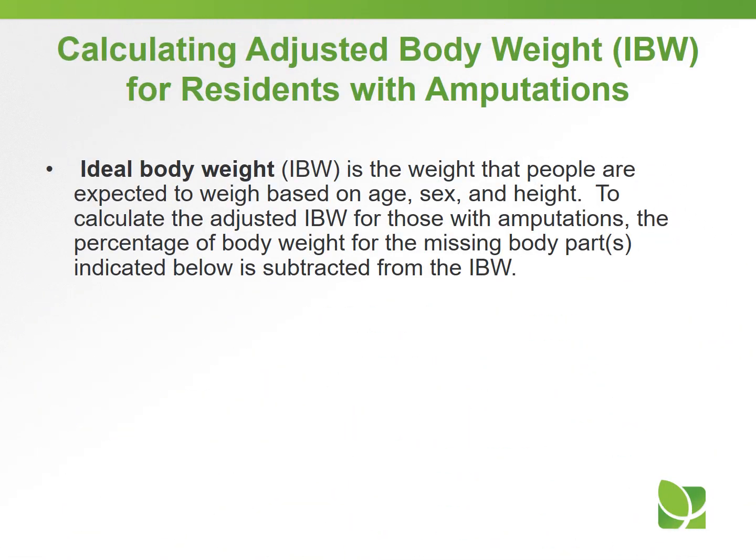Ideal body weight is the weight that people are expected to weigh based on age, sex, and height. To calculate the adjusted IBW for those with amputations, the percentage of body weight for the missing body part is subtracted from the IBW.